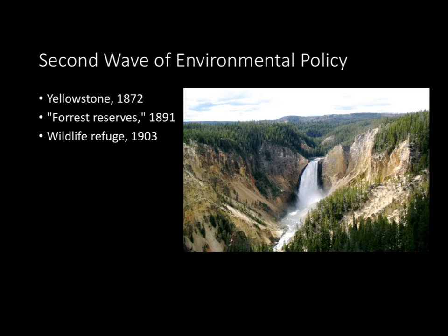The second wave of environmental policy followed a policy of conservation. In 1872, Yellowstone National Park was established as the first national park. Next, in 1891, the forest reserves system was instituted, meaning certain forest reserves were exempt from any logging. Then in 1903, the Wildlife Refuge was passed by Teddy Roosevelt, who was a big-time environmental advocate.